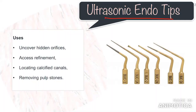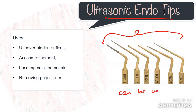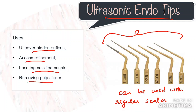Next we have ultrasonic endotips. They are available in various lengths, diameters, tapers and tip configurations. Ultrasonic tips with diamond coating can be used with or without water port delivery. They are attached to regular scalar units with specifications recommended by the manufacturers. In general, these are used to explore hidden orifices, remove pulp stones, negotiate calcified canals and refine the access cavity.